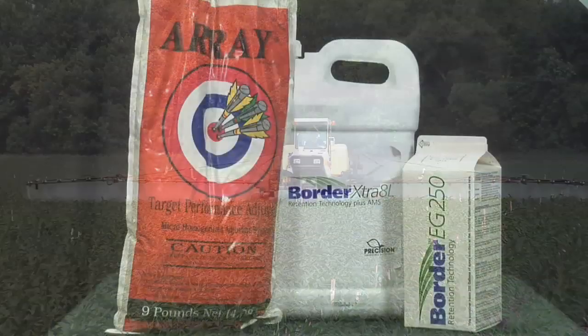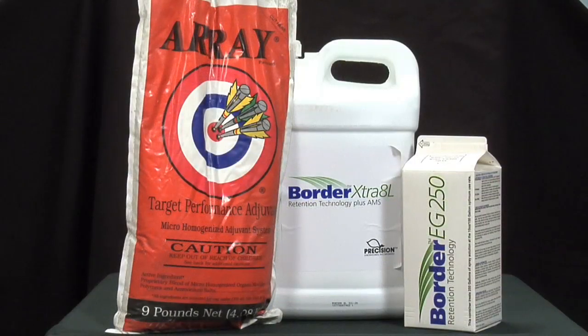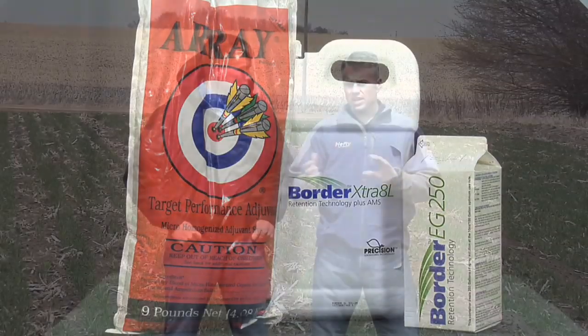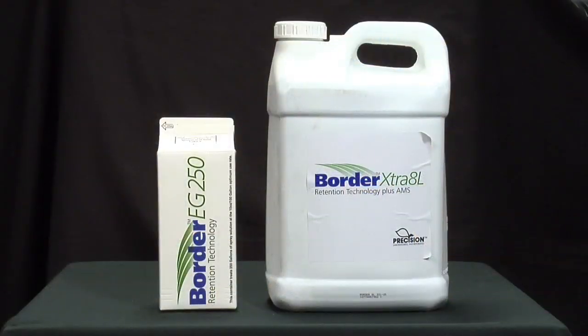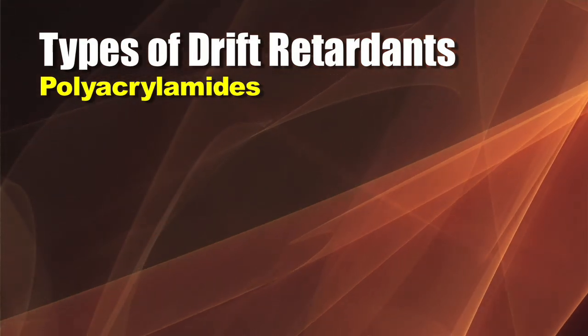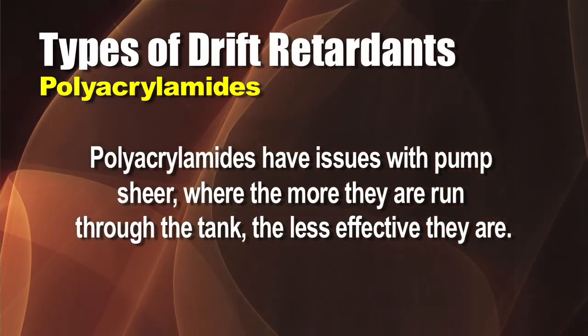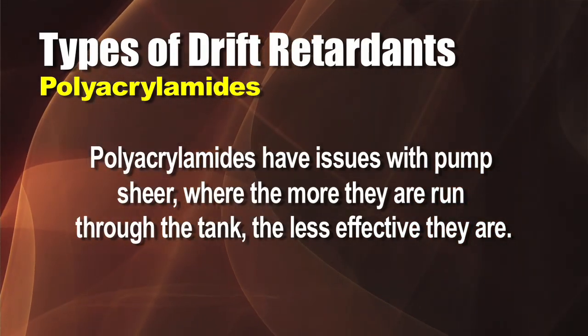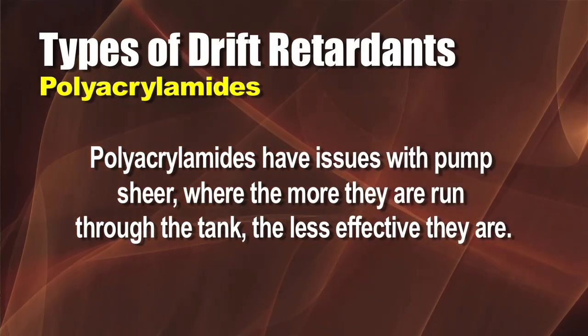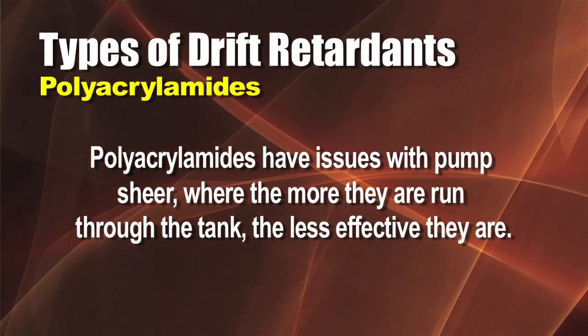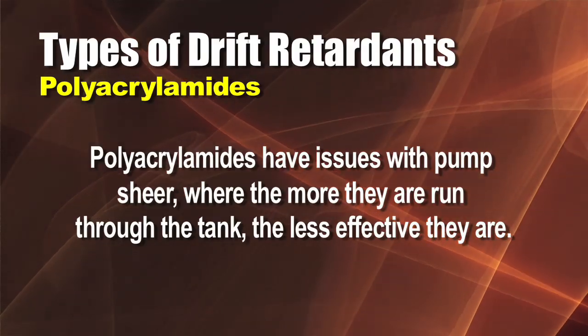Another option is to use products that influence the spray to keep it on target — or do both: switch tips and use what we call a drift retardant. Drift retardants basically make the spray droplet bigger. There are several types on the market. The older types are called polyacrylamides, but the problem with polyacrylamides is pump shear — the more they run through the tank and back through the pump with agitation, the less drift retardant is actually left by the time it's sprayed out, maybe half an hour later in the field.